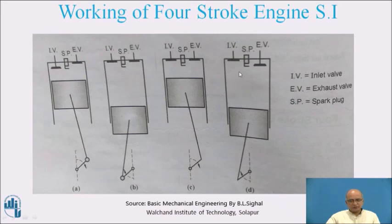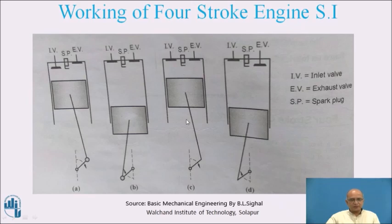When the piston reaches the top dead center during the exhaust stroke, the exhaust valve closes and the inlet valve opens again — suction takes place once more, with entry of the air-petrol charge. After suction is completed, compression follows. When compression is completed, spark is produced, expansion of gases takes place, and power is obtained. Then again at bottom dead center, the exhaust stroke takes place. This cycle repeats continuously for the 4-stroke spark ignition or 4-stroke petrol engine.